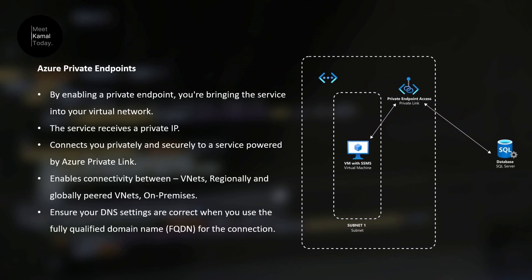There are a few things you should know about when working with Azure private endpoints. By enabling private endpoints you're bringing the service into your virtual network, and this service will receive a private IP of that virtual network. This allows you to connect privately and securely your VM to the Azure platform as a service resource. This also enables connectivity between virtual networks regionally, globally paired virtual networks, and on-premises connections as well.